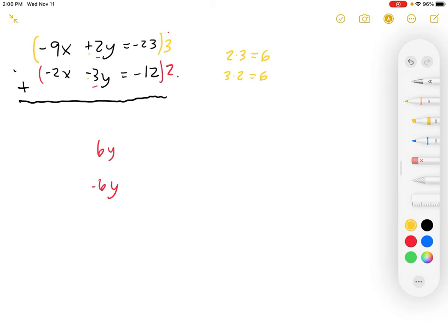So let's go ahead and finish multiplying out the rest of the rows. We have to make sure that we get everything when we multiply. So we have negative 27x, because that's 9 times 3, and we already have the plus 6y. And lastly, negative 23 times 3, that is negative 69.